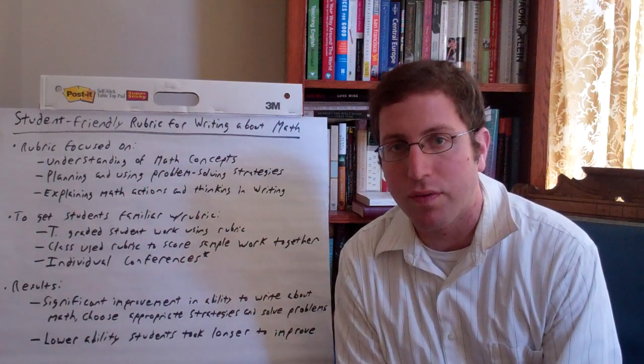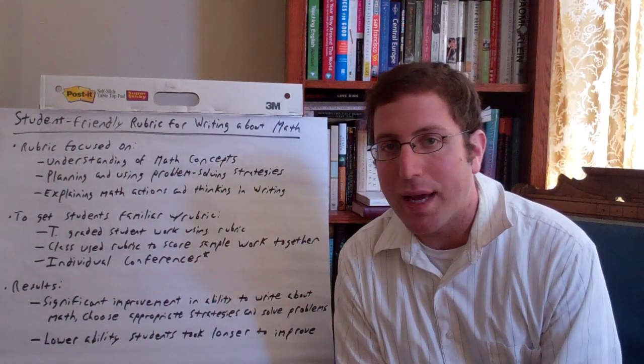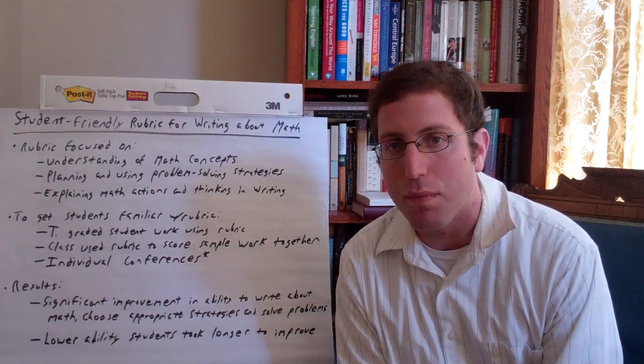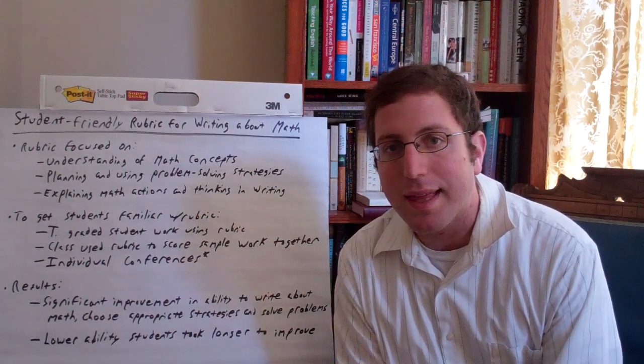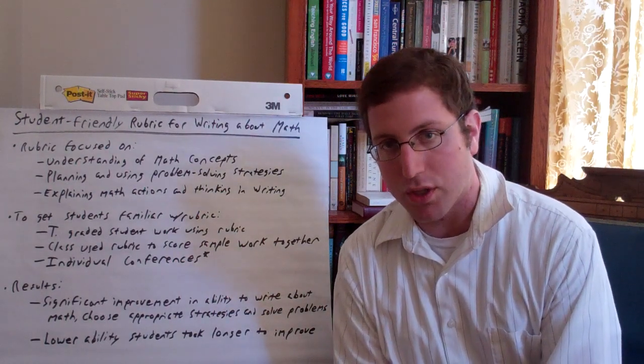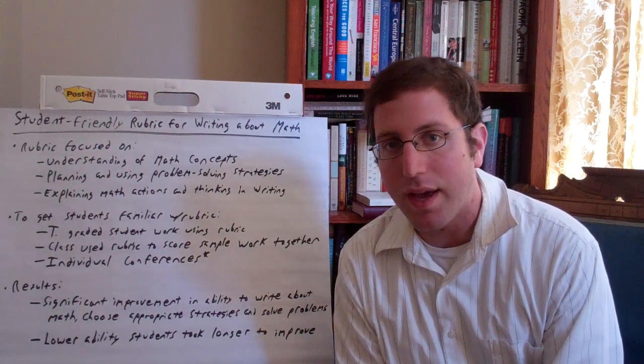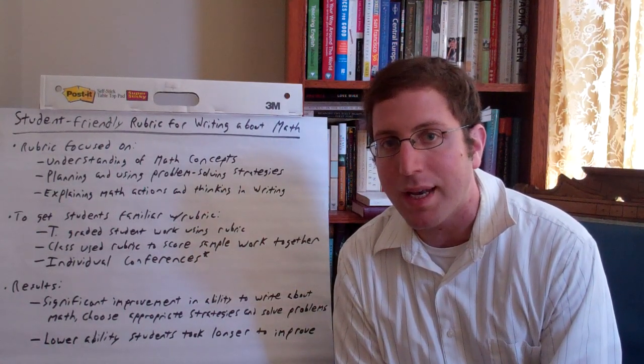They adapted it to make it even more student-friendly than it already was by adding things like taking pronouns like 'it' and making it say 'the problem,' similar things like that to make it much easier for students to really understand what the rubric was talking about. And then this was a five-point rubric, so one to five,